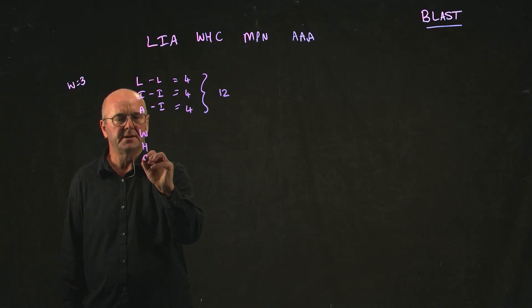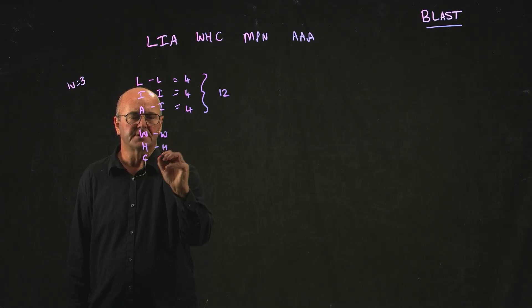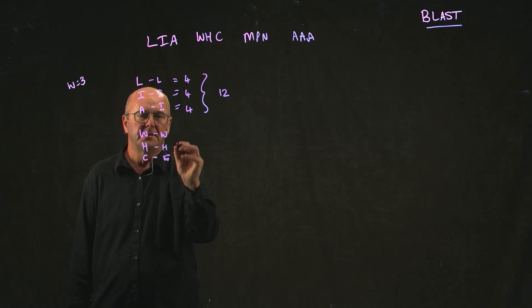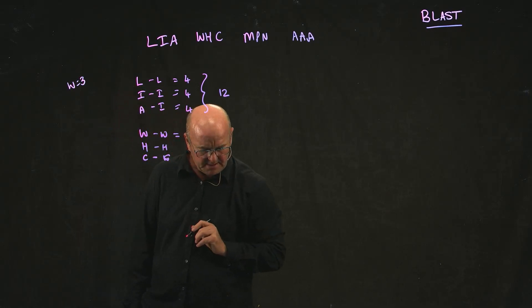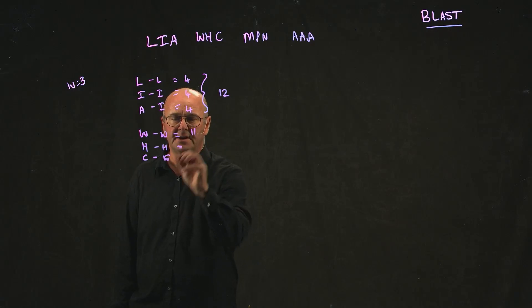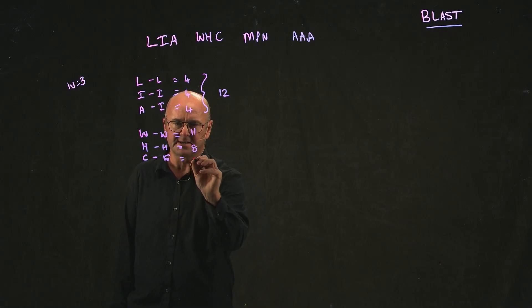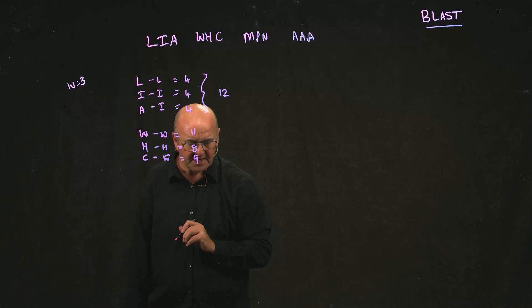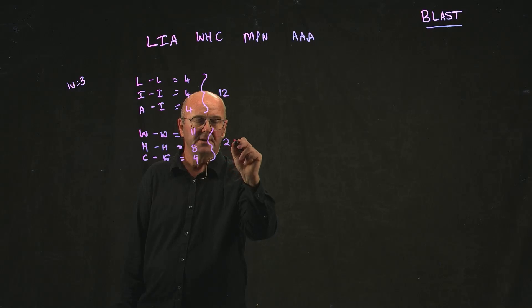Our second word, we look at the scores for a W to a W. That has a score of eleven. An H to an H has a score of eight. And a C to a C has a score of nine. And when we add those up, our score becomes twenty-eight.